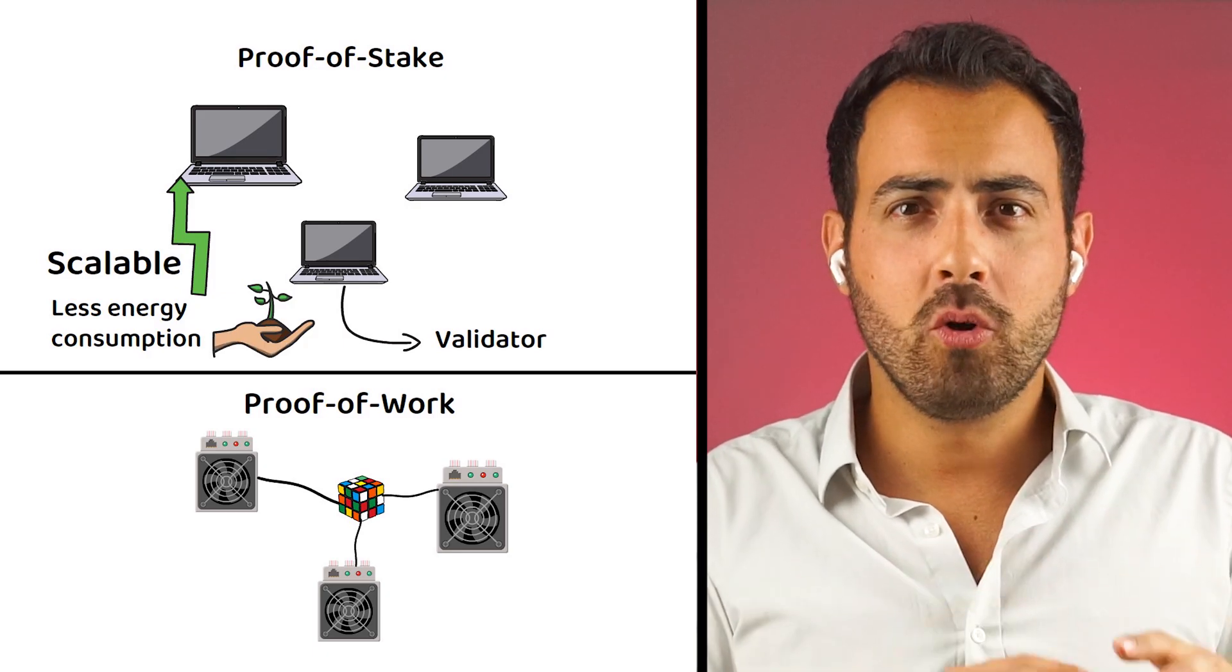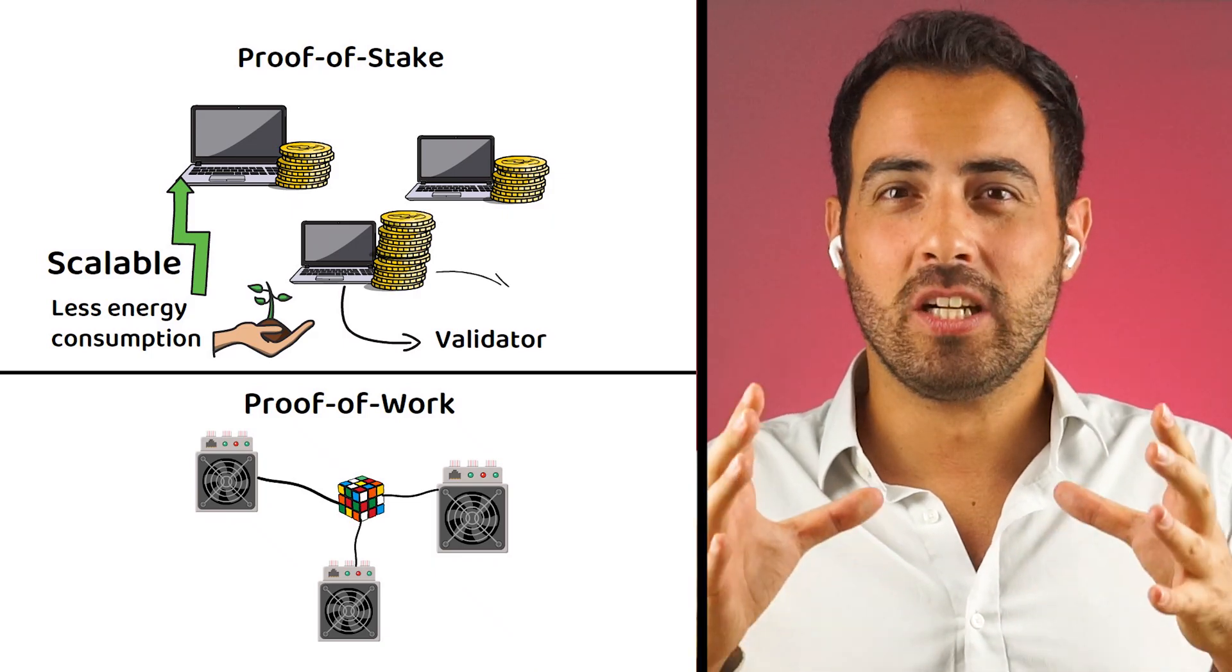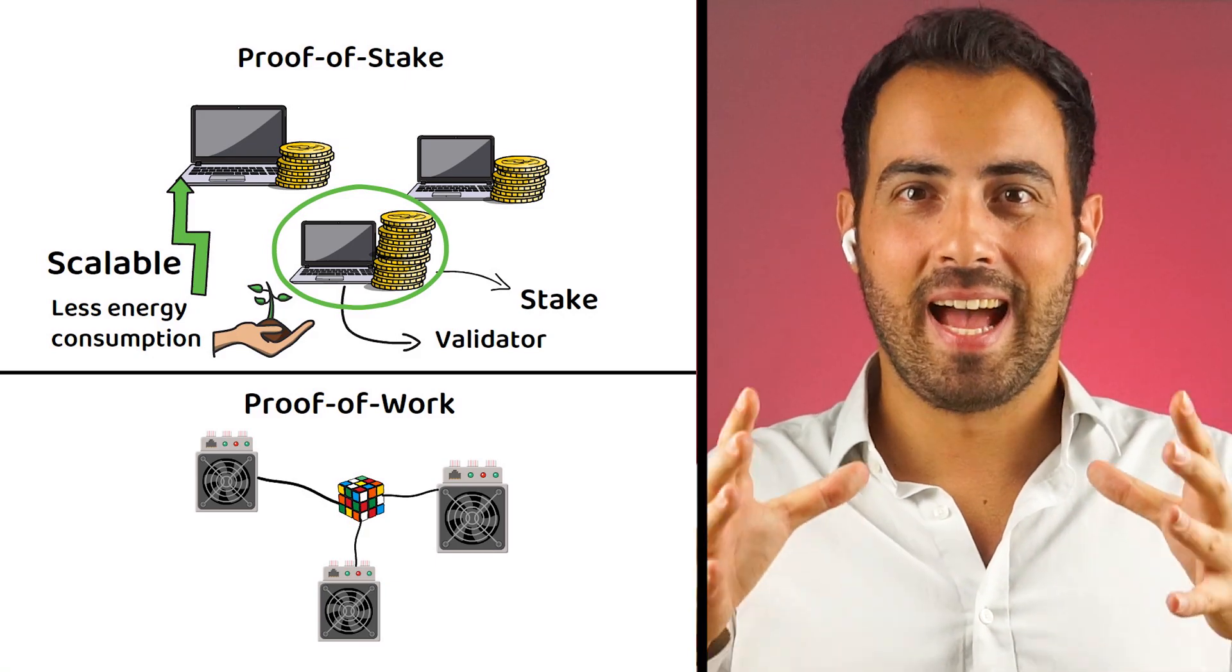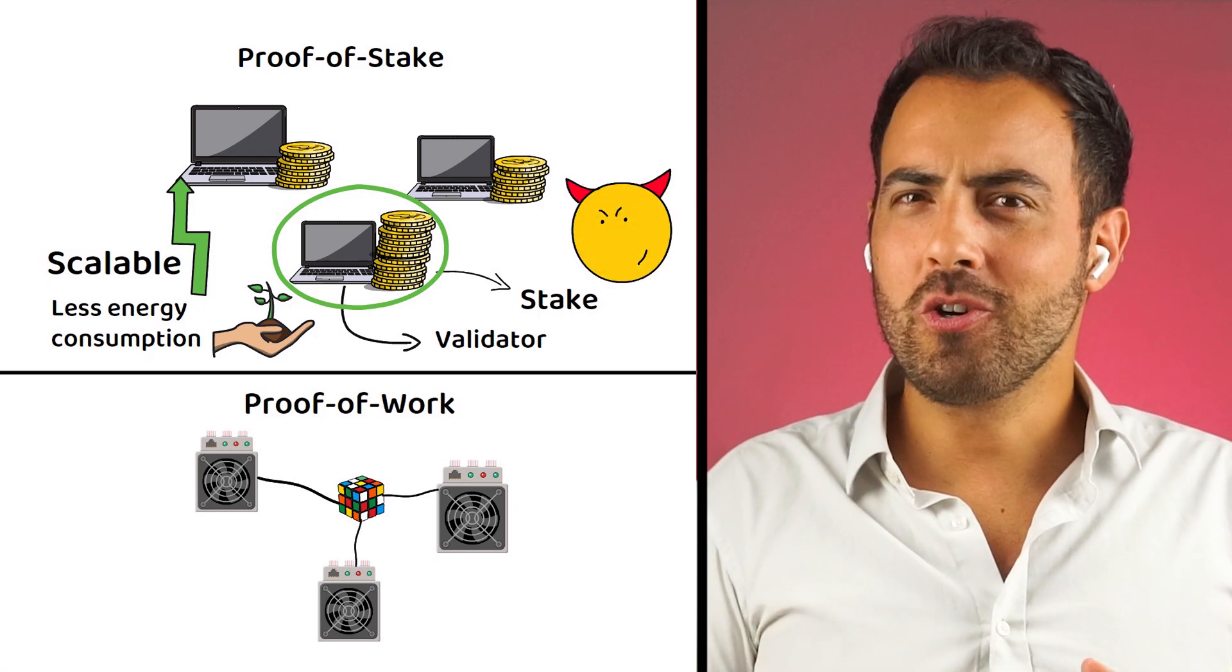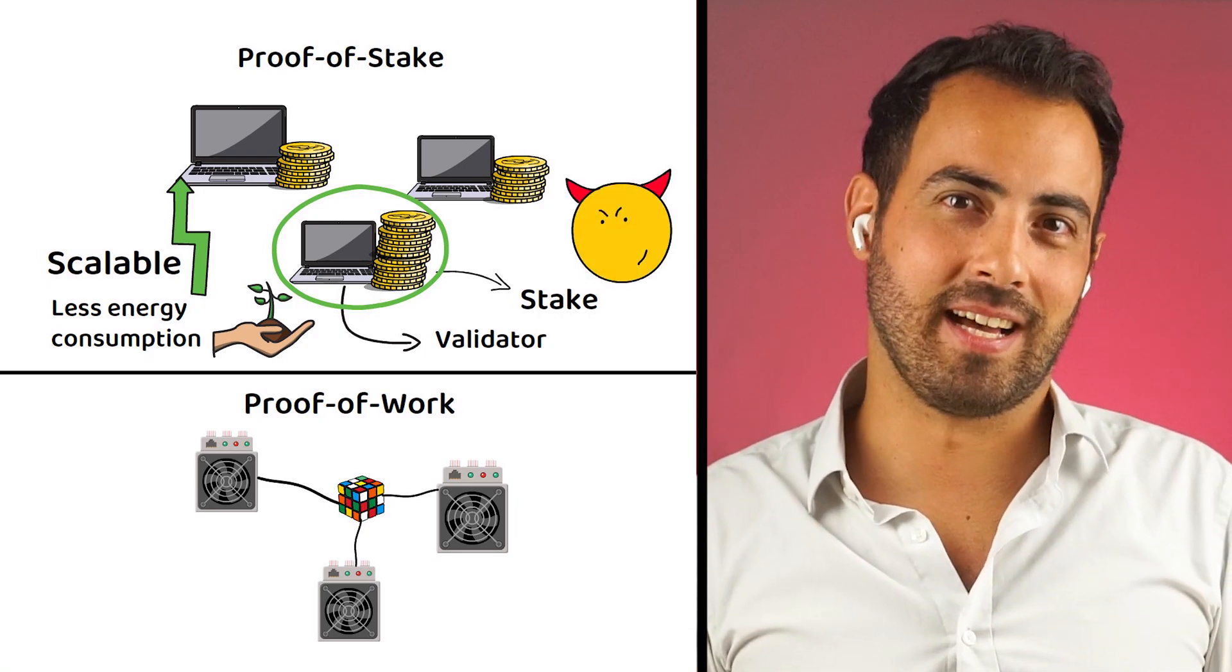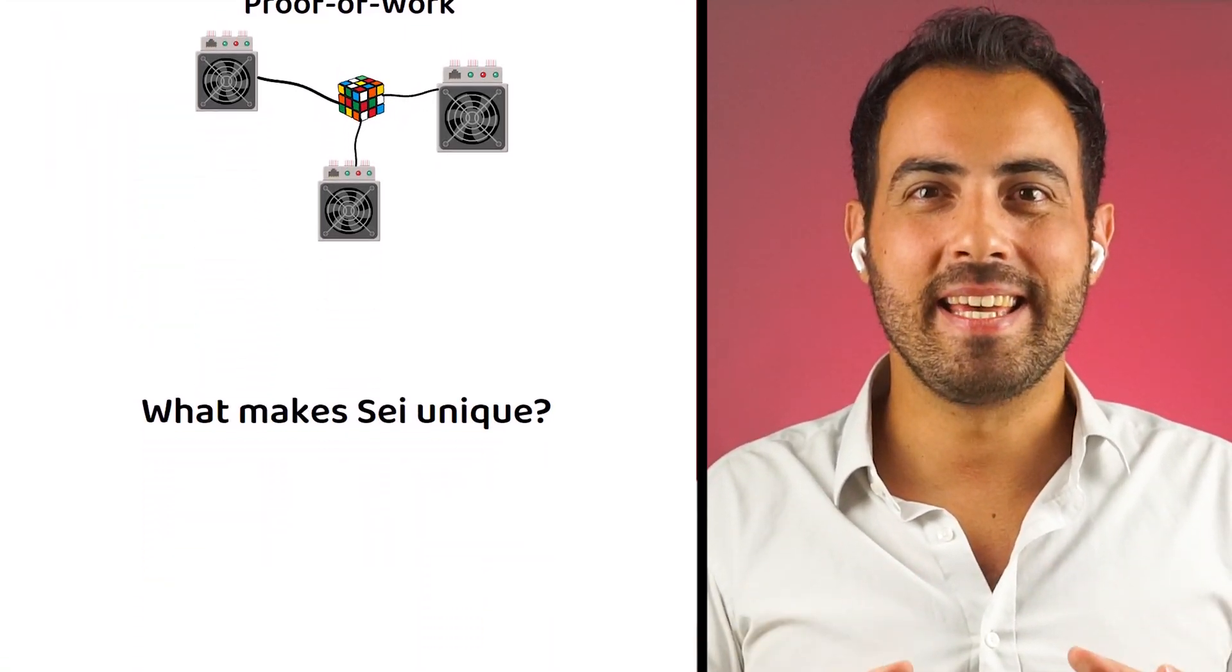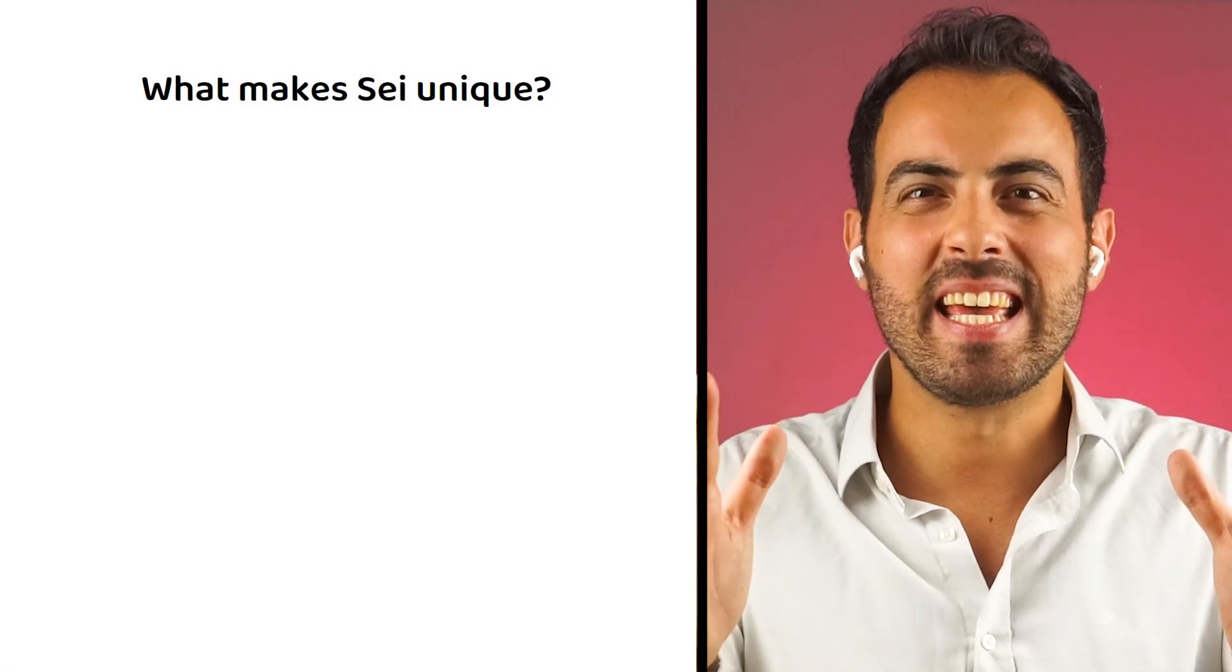Those with the most stake, meaning deposited to the network, are most likely to be chosen to validate the transactions. The logic goes, those with the most invested have the most to lose by cheating the system. Of course, no system relies only on one individual entirely, and there are those who check the validator to ensure honesty. Now that we know what SAI is and how it works, let's find out what makes SAI unique.